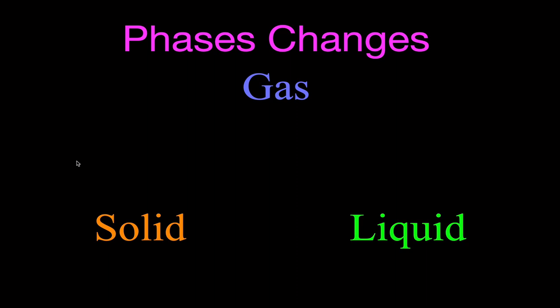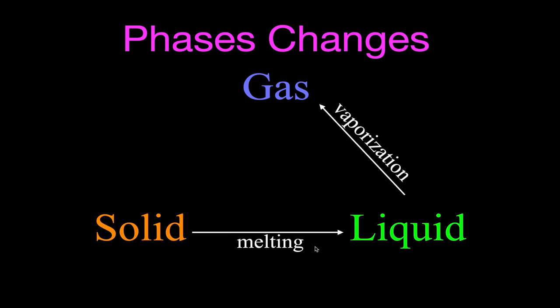Now we have phase changes. When we go from a solid to a liquid to a gas, we're increasing the energy; going the other way, we're decreasing energy. Going from solid to liquid is called melting — sometimes called fusion. Going from liquid to gas is called vaporization, not evaporation. Evaporation is when a liquid left out gains energy from the environment and particles leave gradually. You can also go right from a solid to a gas — as with dry ice, solid CO2 — skipping the liquid phase entirely. That's called sublimation.